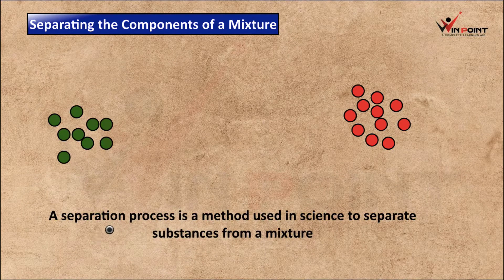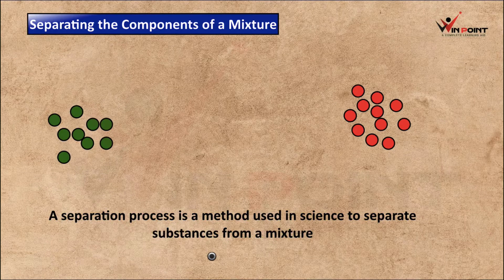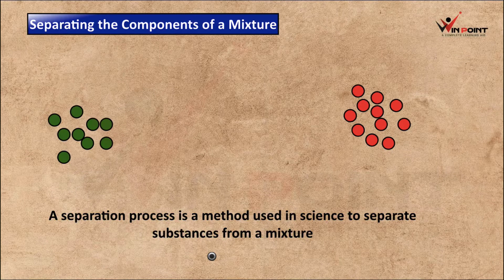In science there is a definition for separation: a separation process is a method used in science to separate substances from a mixture. This process is known as separation. Now we are going to discuss different methods of separation.